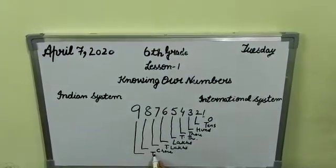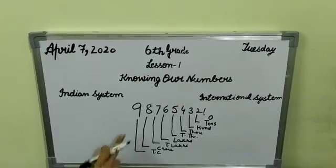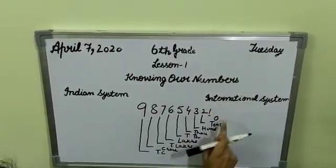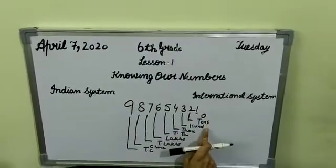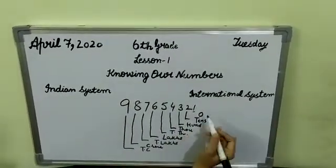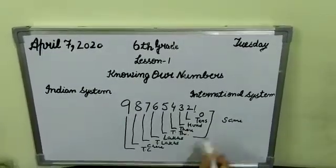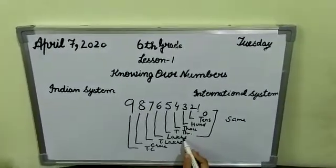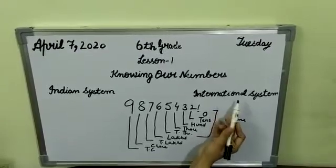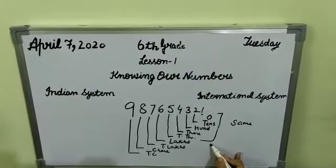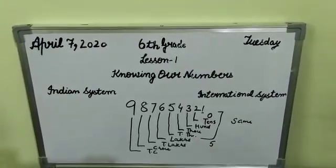This is according to Indian system, but according to international system—ones, tens, 100, 1000, 10,000—up to this it is same. But after that, lakhs... according to international system we will not take lakhs. That means in one lakh how many zeros are there? 5 zeros are there.